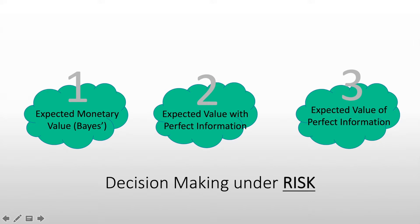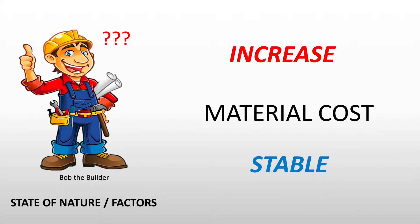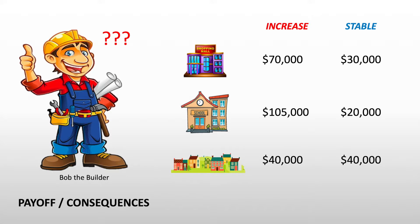With our problem — remember Bob the Builder — Bob has three different alternative solutions: either build a shopping mall, build a school, or build houses. His state of nature is whether material cost either increases or stays stable at a certain period of time. For decision making under risk, we add probabilities: a probability of material cost increase of 60% and a probability that material cost would be stable of 40%.